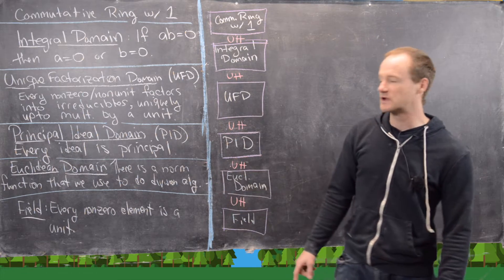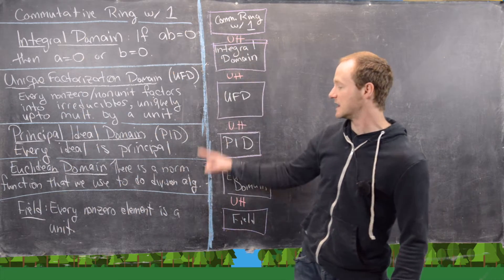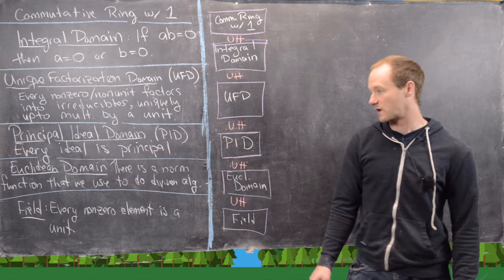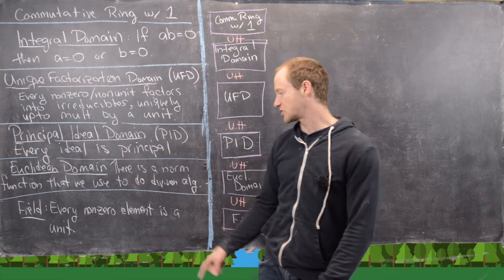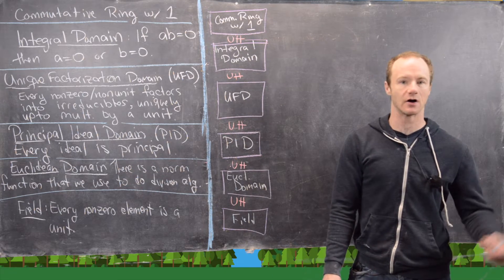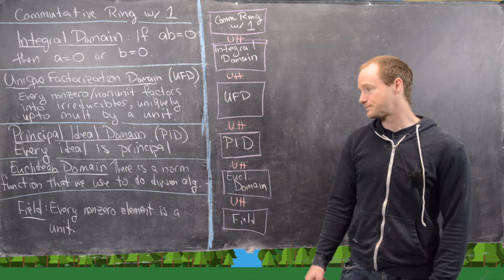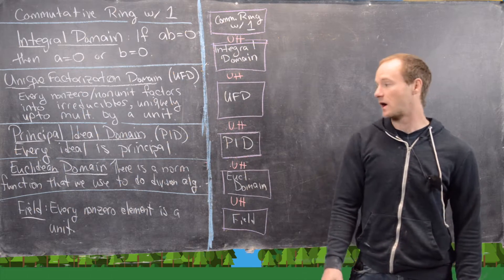Next we have a Euclidean domain. And that's an integral domain that has a special norm function. And that norm function allows us to do the division algorithm essentially. So that's an important type of integral domain as well.